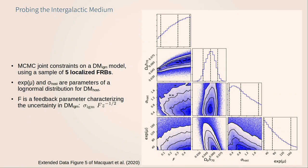This last point about cosmology shows constraints made on cosmological parameters using a sample of five localized FRBs, from back in 2020. It tries to jointly constrain properties of the distribution of host contributions, the cosmological parameters, and a feedback parameter related to the width of the dispersion. We do get a decent constraint on omega_B times H_0, but the other parameters are not very well constrained. The takeaway is that we really need more FRBs with associated redshifts in order to make these constraints.